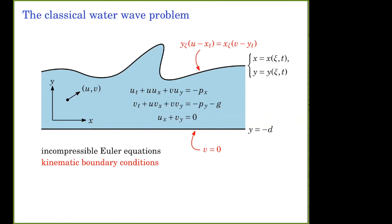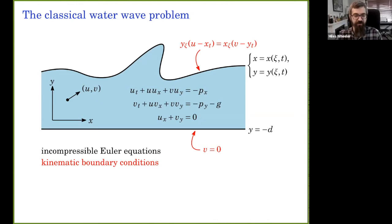To clarify notation: the array (u, v) represents the velocity field. For a fluid particle at position (x, y), the ODE is ẋ = u and ẏ = v, where u and v depend on x and t.